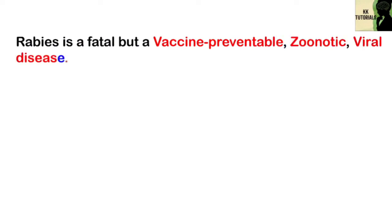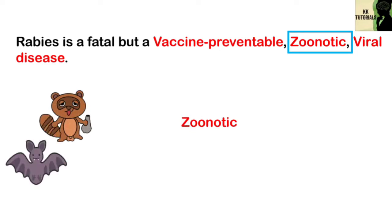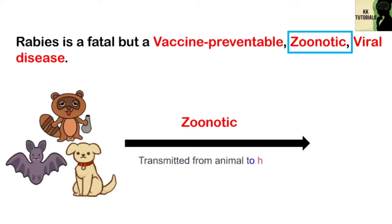In this video we are going to talk about one of the deadliest diseases, rabies. Rabies is a fatal, meaning deadly, but vaccine-preventable zoonotic viral disease. Zoonotic disease means a disease that is transmitted from animals to humans.